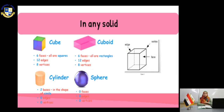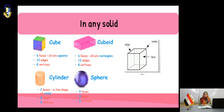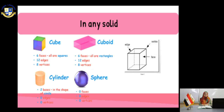The cuboid is the same as the cube, except in one thing: the faces are in the shape of a rectangle. In the cube you had squares; in the cuboid all the faces are in the shape of a rectangle. You have six faces of rectangular shape, 12 edges, and eight vertices.